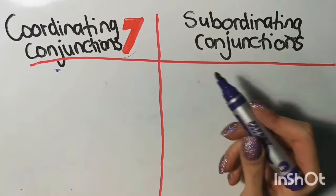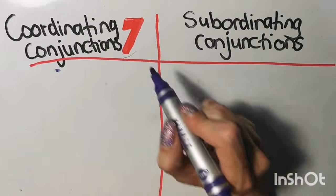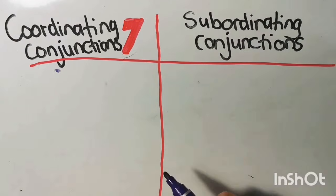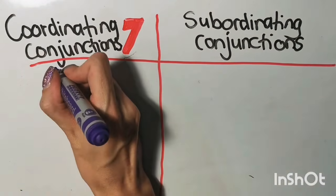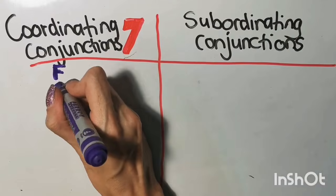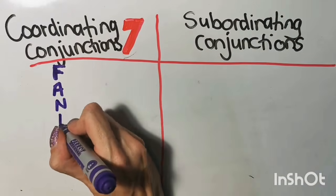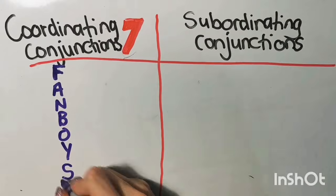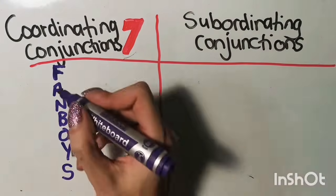My tip to you is, know the seven coordinating conjunctions. These seven coordinating conjunctions spell a word, so it is even easier to remember them. The word they spell is FANBOYS.